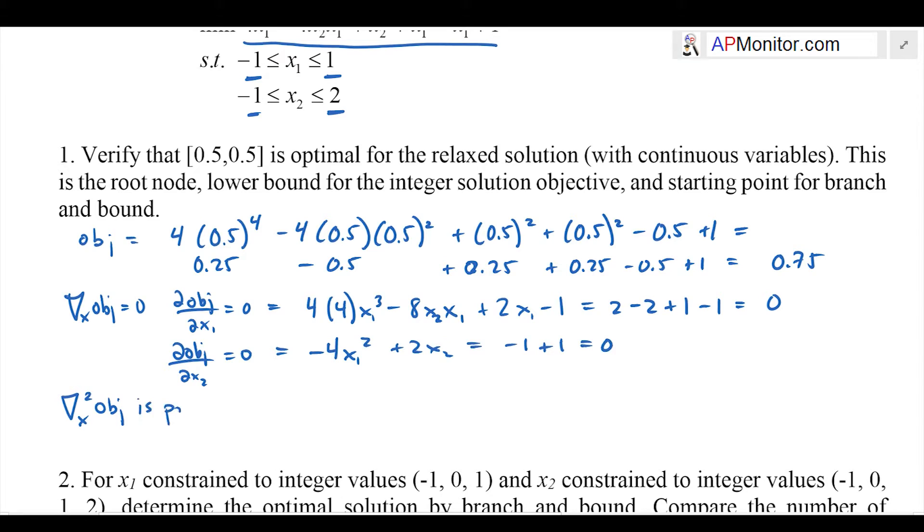I also need to compute the second derivative and confirm that it's positive definite in order to say that it's a minimum. I'll take the expressions from above and take the next partial derivative with respect to each of the variables and calculate the matrix. It's going to be a 2 by 2 matrix for the second derivative of my objective with respect to x.